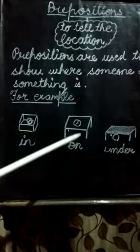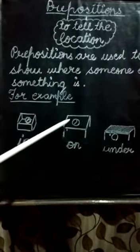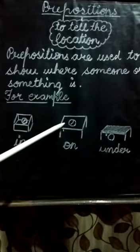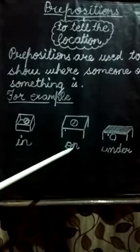On. Here the ball is on the table. The ball is situated on the table. So the preposition word is on.